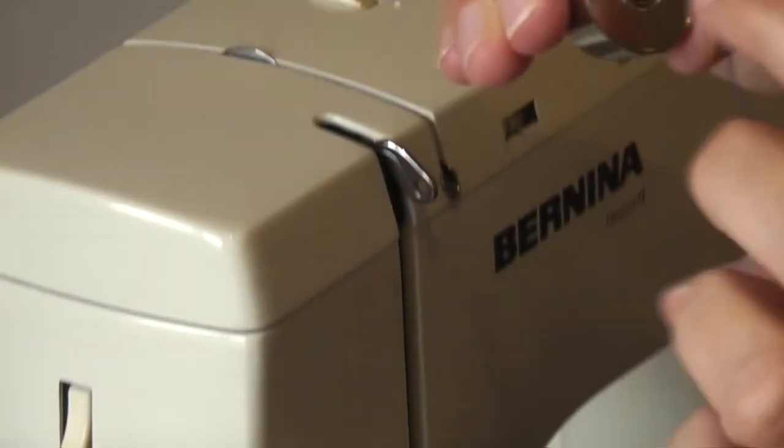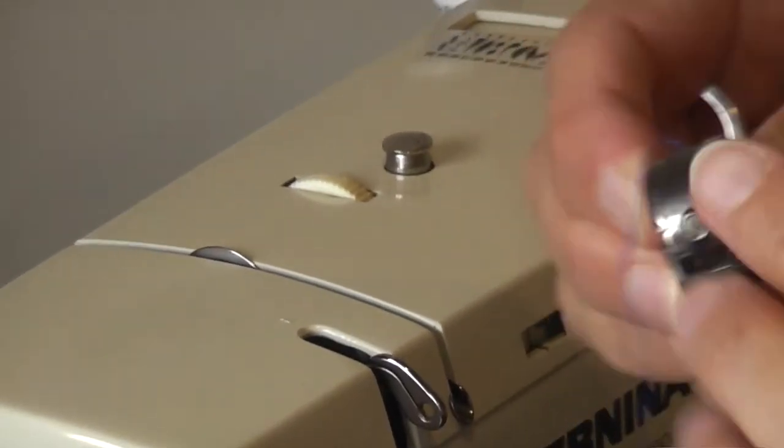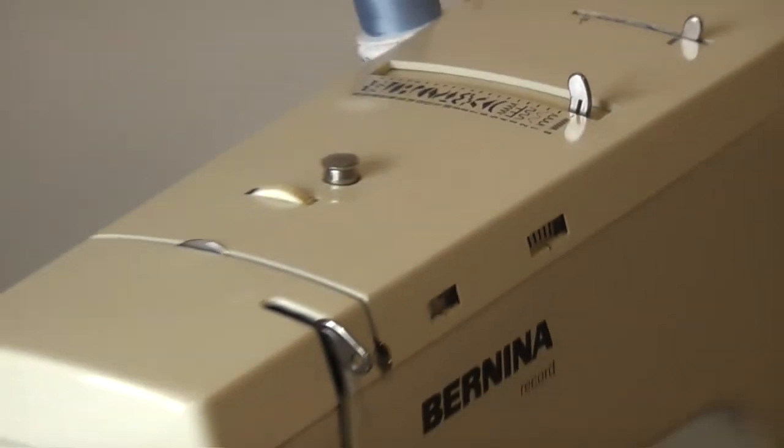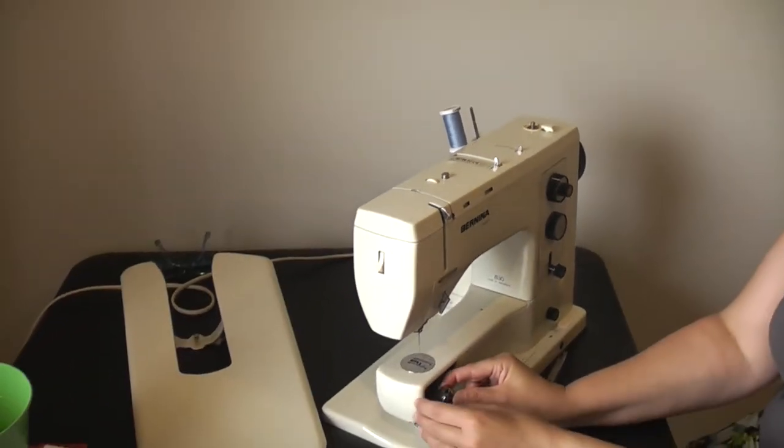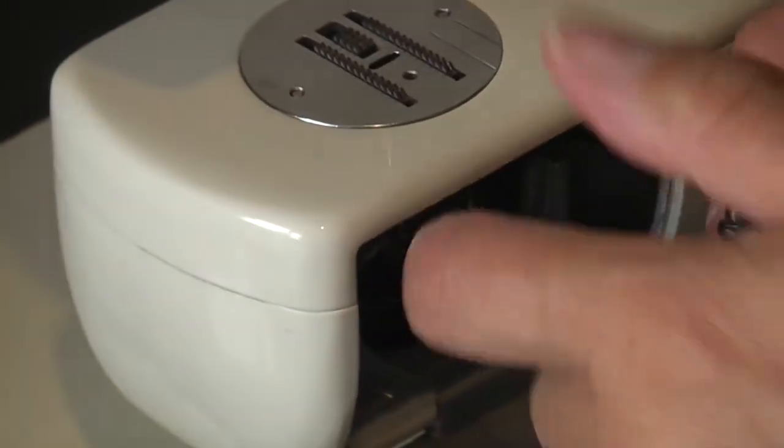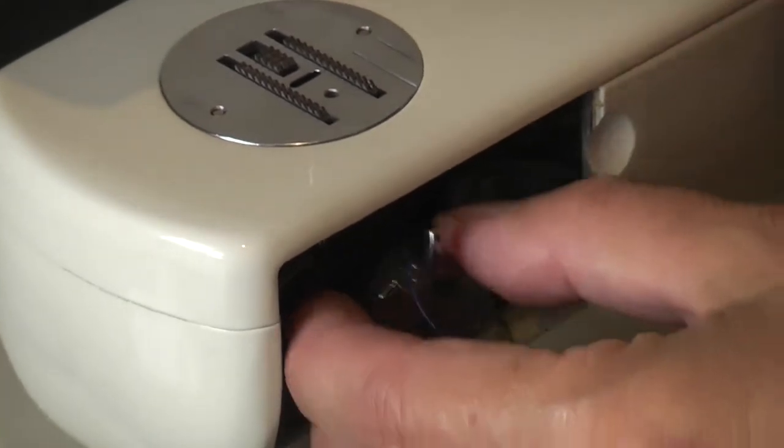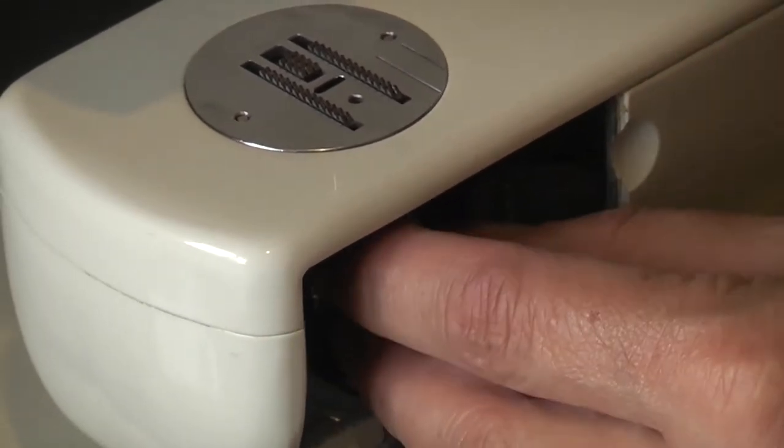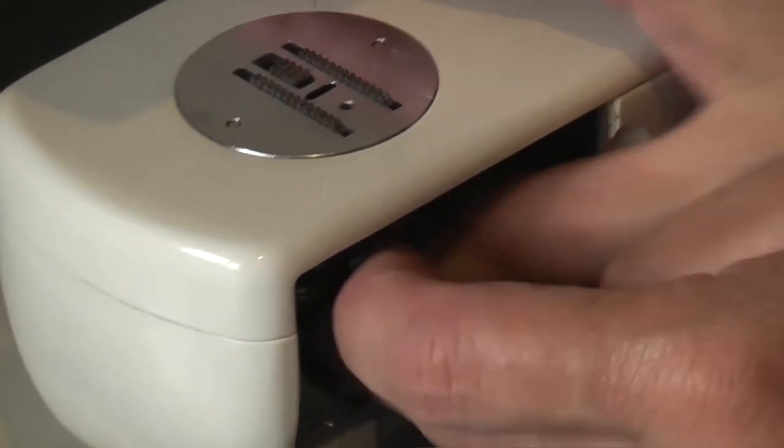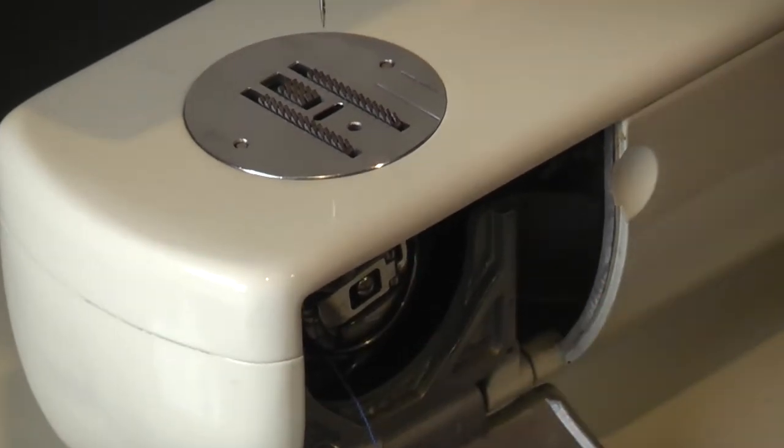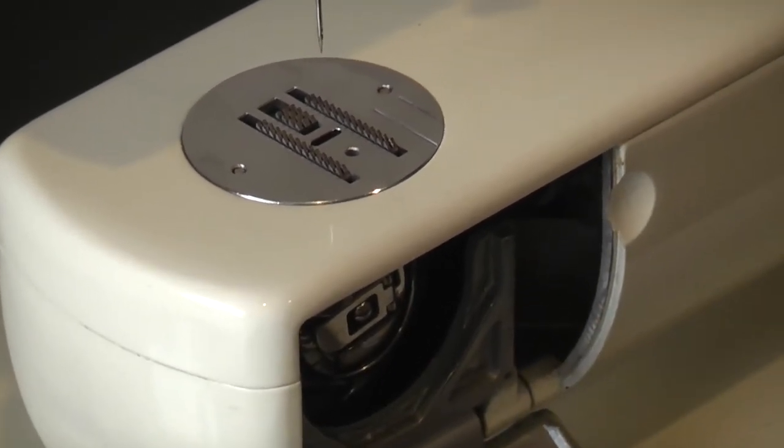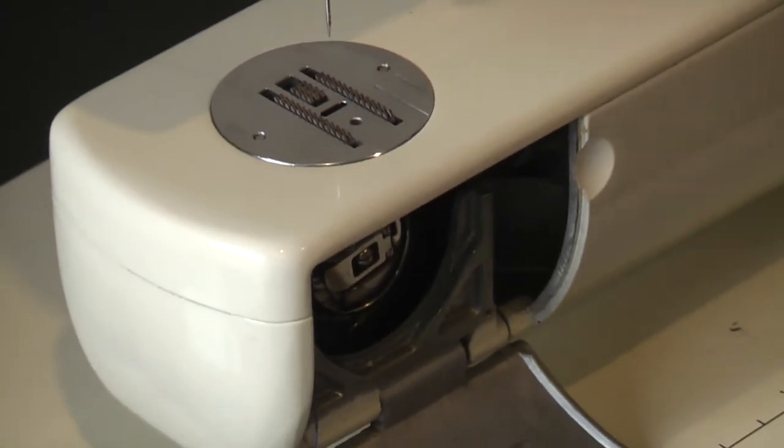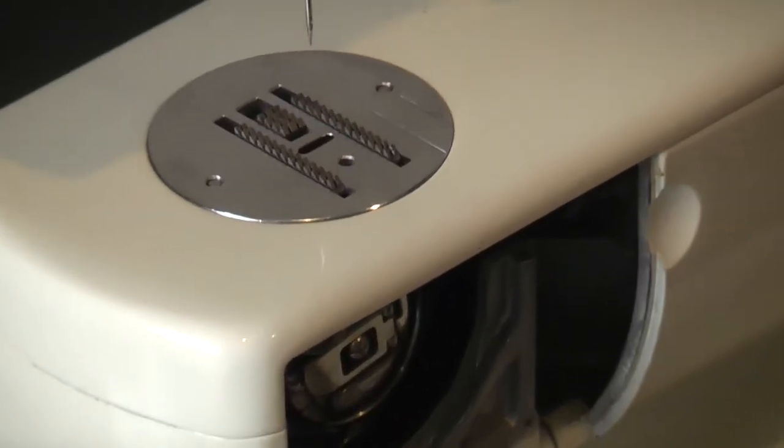So now with the bobbin part facing away, I'm going to take it down into the machine. And it just goes on, that sticky up bit straight up again, and it's going to click into place. And that's it. That is the bobbin done. The next part is actually threading the machine at the top and going through to the needle.